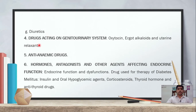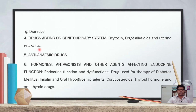The fourth chapter covers drugs acting on the genitourinary system, including oxytocin, ergot alkaloids, and uterine relaxants. The fifth chapter covers anti-anemic drugs, addressing iron deficiency anemia, folic acid, and cyanocobalamin deficiency anemia. The sixth chapter covers hormones and antagonists and other agents affecting endocrine function.